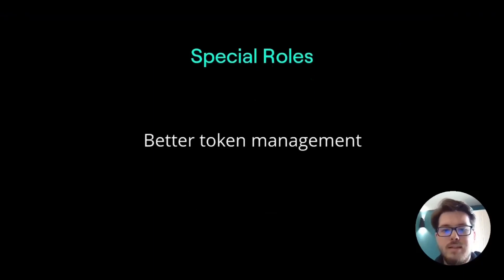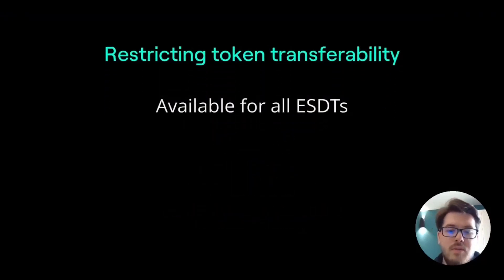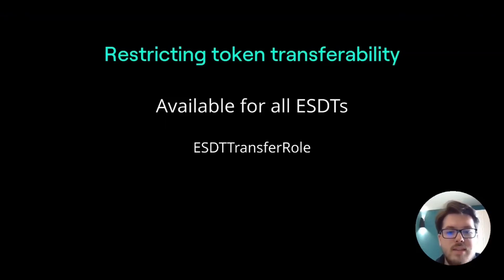Even though the token manager has some extra abilities, they don't need to do everything themselves — that's where special roles come in handy. The token manager can assign another address to handle those tasks. The manager of an ESDT token can set or unset special roles for a given address. All available ESDT types have the ESDT transfer role, which restricts transferability of the token only to addresses that have that specific role, and those addresses can send to any other address.